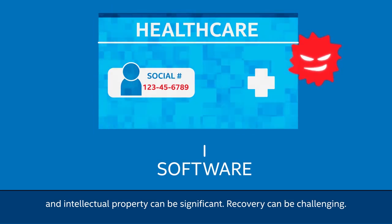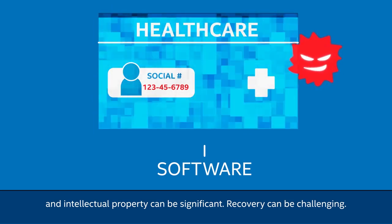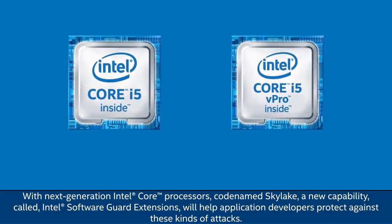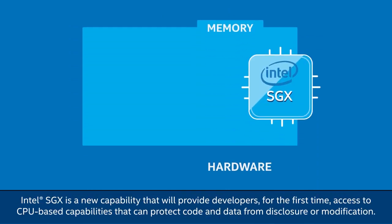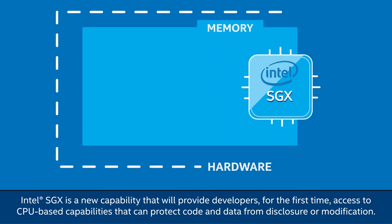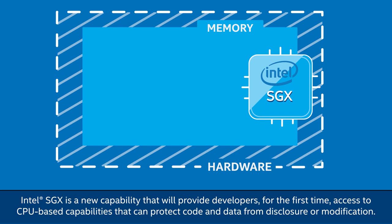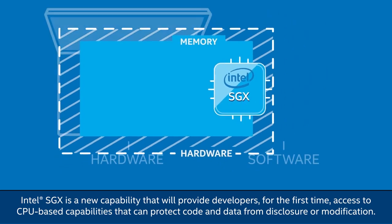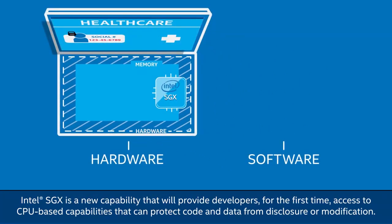Recovery can be challenging. With next-generation Intel Core processors, codenamed Skylake, a new capability called Intel Software Guard Extensions will help application developers protect against these kinds of attacks. Intel SGX is a new capability that will provide developers, for the first time, access to CPU-based capabilities that can protect code and data from disclosure or modification.